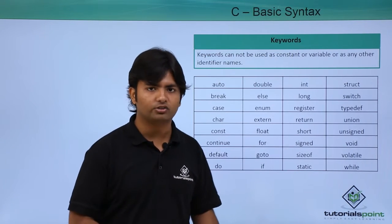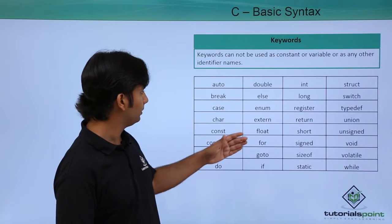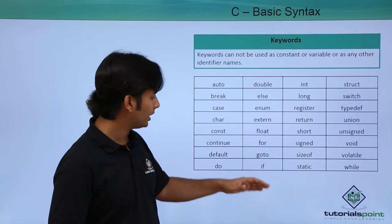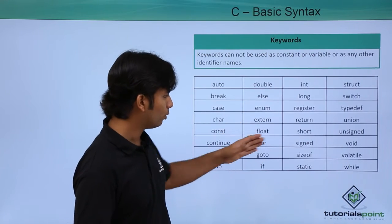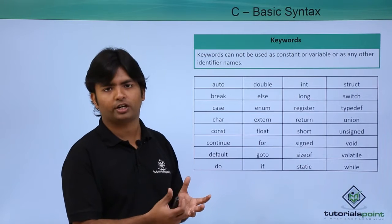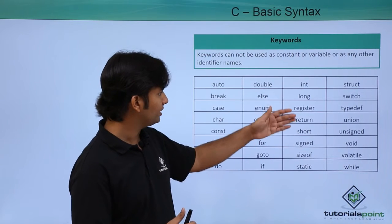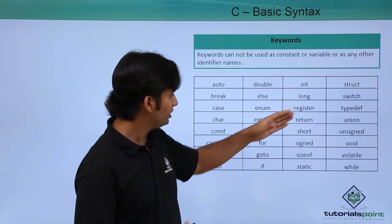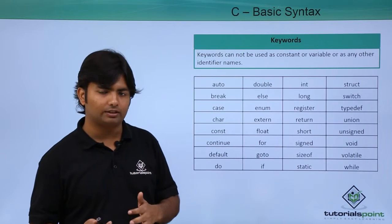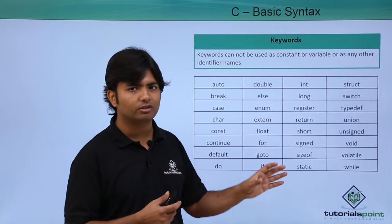Some of them are for control statements. For example, here you can see 'for' is a loop. 'if', 'do', 'while' are basic control statements. Similarly you can find data types like double, integer, long, float. Overall we have 32 keywords in C language.